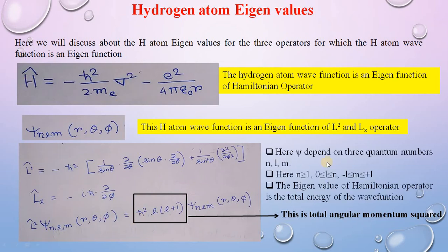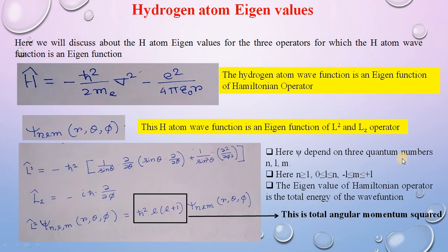The quantum number n is always an integer greater than or equal to 1. For any value of n, l can range from 0 to n minus 1. For example, if n equals 3, l can be 0, 1, or 2. For any value of l, m ranges from minus l to plus l. The eigenvalue of the Hamiltonian operator is the total energy of the wave function.